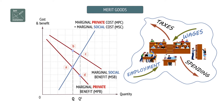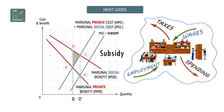But markets fail by only providing output Q, and the welfare loss is area A, B, C. Several options are available, including subsidising Merit Goods to increase output to QS. In this case, the subsidy would be C to D.